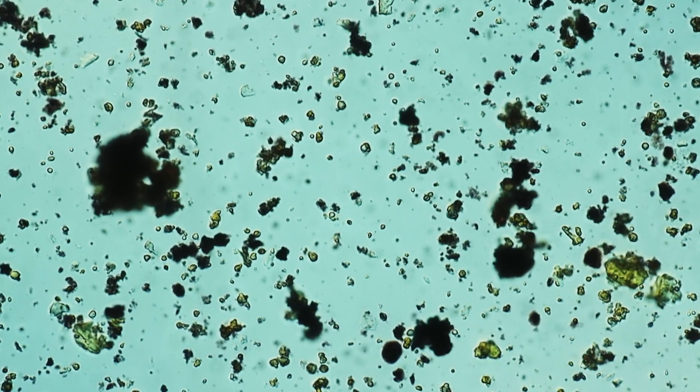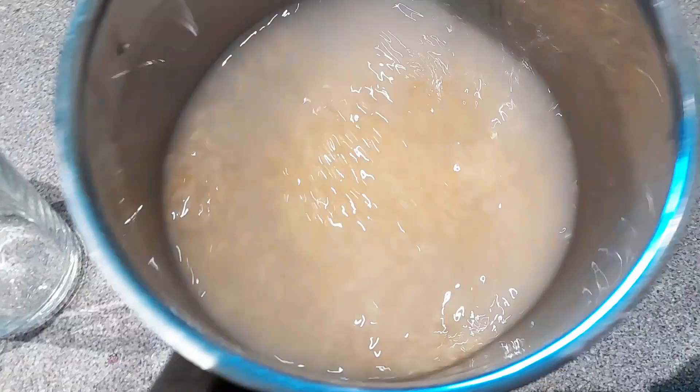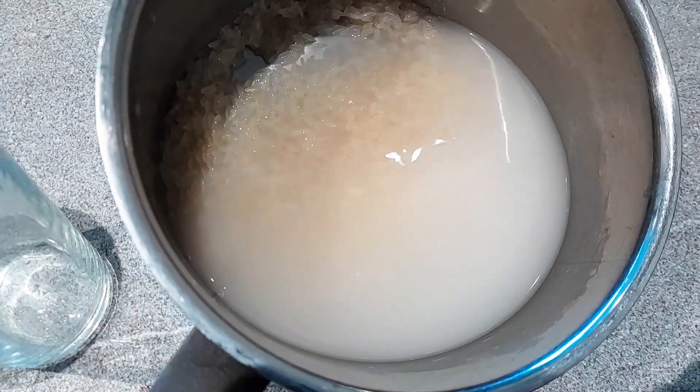I stained them with iodine and the iodine reacts with the starch and turns it black. That's basically what we're able to see here under the microscope.